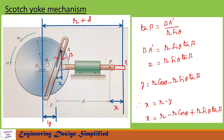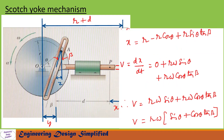To find the velocity of point P on the slider, we differentiate x with respect to time: v = dx/dt. Since r is constant its derivative is zero. Differentiating gives r·ω·sinθ, and since beta is constant, the next term becomes r·ω·cosθ·tanβ. So the velocity of point P is: v = rω(sinθ + cosθ·tanβ).